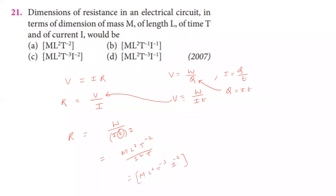That is the answer. The third option is the correct answer. Resistance dimension formula is ML²T⁻³I⁻². Next question.